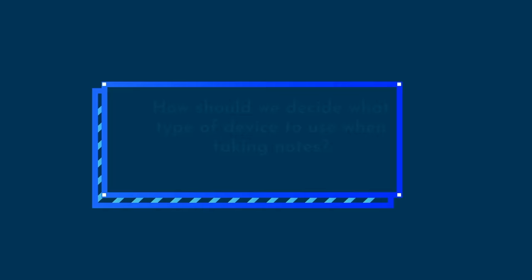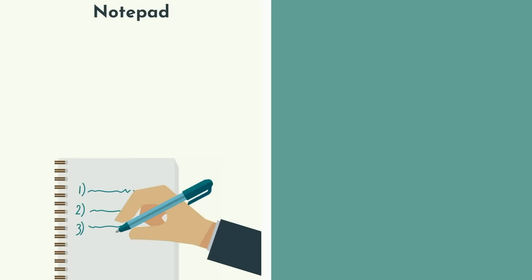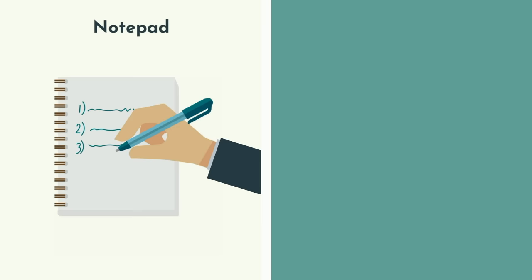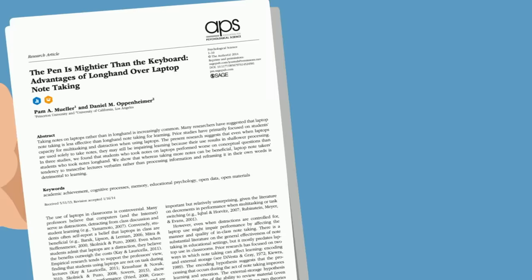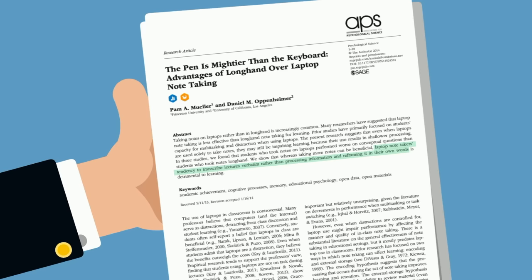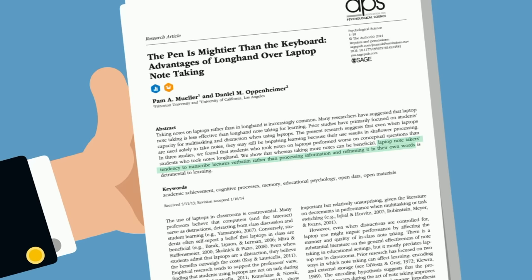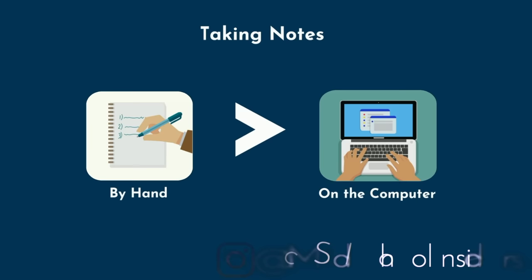With that in mind, how should we decide what type of device to use when taking notes? Write on a notepad and you lose much of the convenience of storing files digitally, having them searchable, or being able to quickly insert images. Type on a computer and you cannot easily draw, or you may be prone to distractions like social media or instant messaging. Additionally, Mueller and Oppenheimer in 2014 demonstrated that typing notes on a laptop is more likely to result in transcribing lectures verbatim rather than deeper information processing and reframing into one's own words — in short, less of it actually sticks.